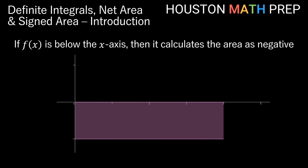If our function f of x is below the x-axis, then it calculates the area as negative. Now my function is one unit below, and I still have a rectangle that's four units wide — so still one times four for the area. Our definite integral would say that this area is actually negative four between the function and the axis on the interval x equals zero to x equals four.